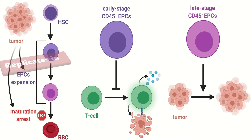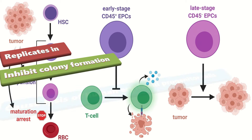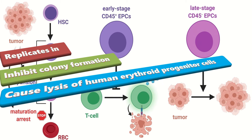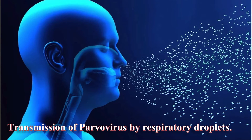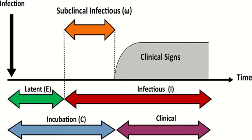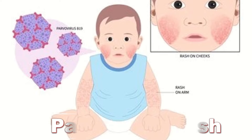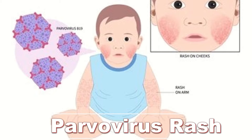It inhibits colony formation and causes lysis of human erythroid progenitor cells. B19 is the only known pathogenic Parvoviridae in humans, transmitted by respiratory droplets. The incubation period is 4 to 14 days. Rash does not occur until 17 to 18 days after infection, about 5 days after the disappearance of virus from the serum and respiratory droplets.